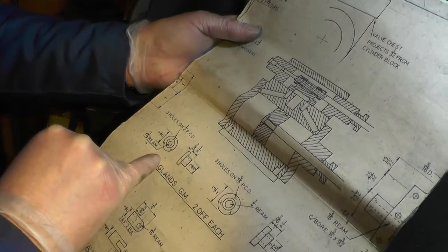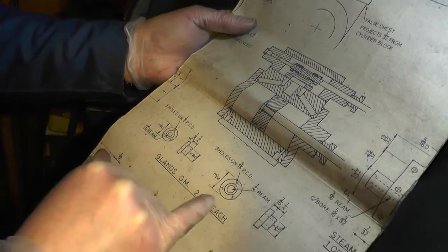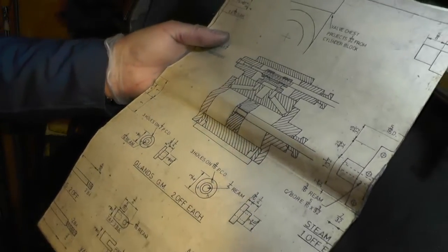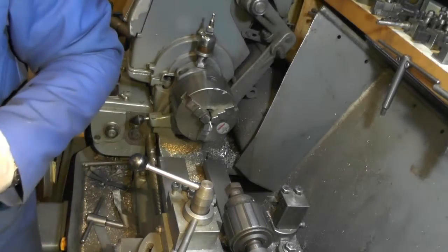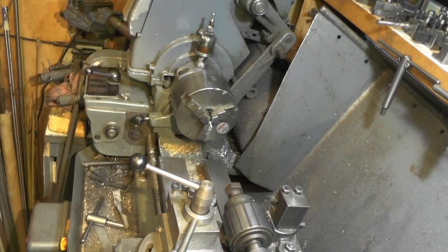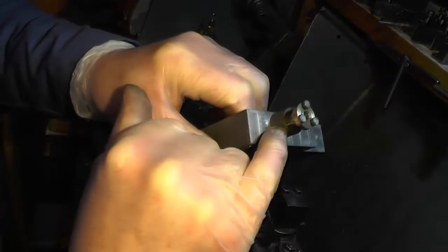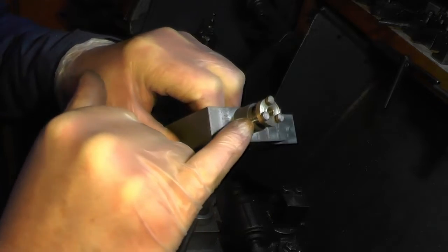Then the other thing that I've got to do, and I'm just on with that now, is make some 8BA screws. I've not got no 8BA screws, I've got plenty of 6BA. But because of the limited space at the edge of this hole you can't go no bigger than 8BA.